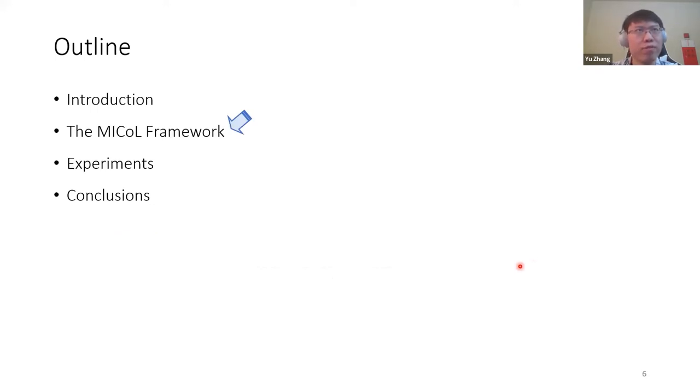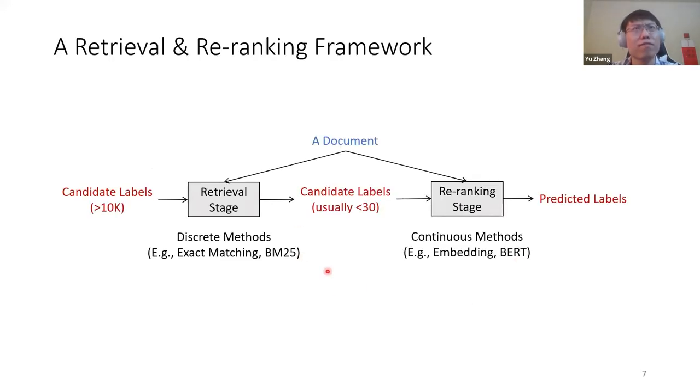Now let me introduce our MICO framework. Here MICO stands for metadata induced contrastive learning. Let's start from a very simple two-stage framework, retrieval and re-ranking frameworks. So for each document, a testing document, we need to infer its relevant labels. As I mentioned, the candidate pool, the original candidate pool is very large, larger than 10,000. So in this case, we first use some discrete methods like exact matching or BM25 to retrieve a relatively small candidate pool, usually less than 30 labels. And then we can use continuous methods like word embedding or BERT to re-rank these labels. And those top-ranked ones will be our final predictions. A pretty simple framework. Now the problem is how to instantiate these two stages.